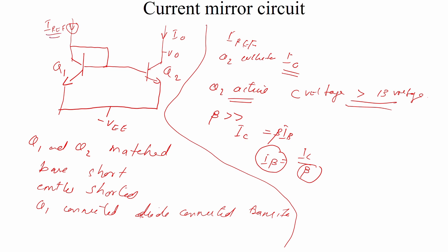The diode-connected transistor Q1 generates a VBE voltage. Q2 has the same VBE voltage because the base and emitter of Q1 and Q2 are shorted together. Since the transistors are identical, the collector current IE of Q2 is also identical.